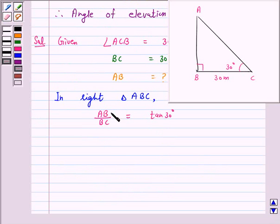Now, AB we want to find. So, AB over BC, BC is given to us, 30 meters.